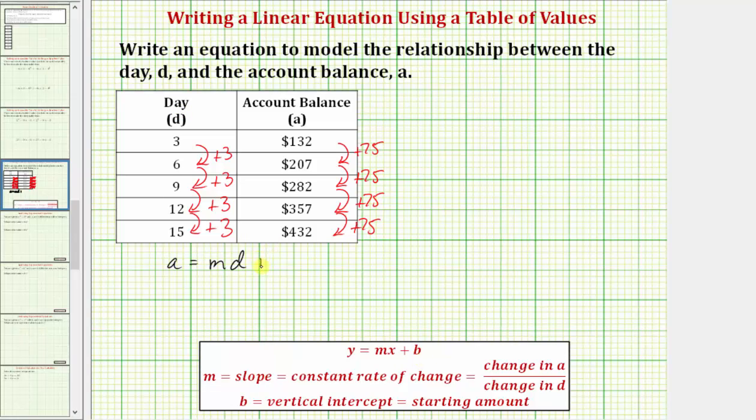Plus B, where B is the vertical intercept, which also would be the starting amount, or the account balance at day zero.